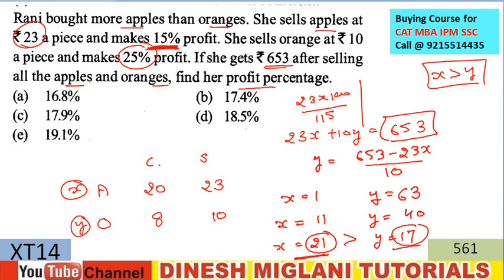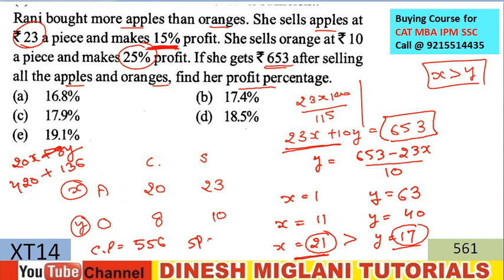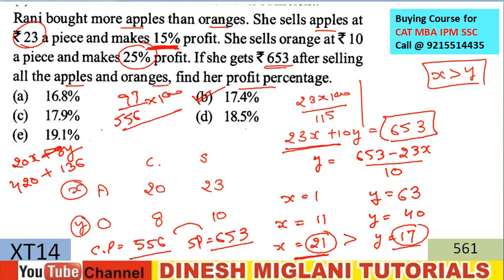Total cost price = 20X + 8Y = 20×21 + 8×17 = 420 + 136 = ₹556. Selling price = ₹653. Profit = 653 - 556 = ₹97. Profit percentage = (97/556) × 100 ≈ 17.4%. The answer is B.